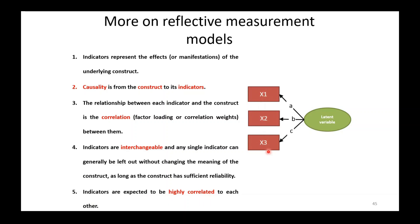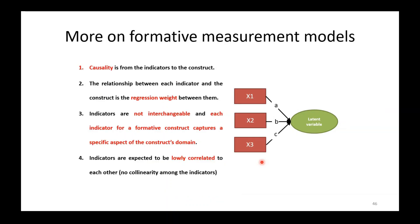The next type of variables are formative measurement models. There are four characteristics. Number one: causality is from the indicators to the construct — the arrows run from x1, x2, and x3 to the latent variable. Number two: the relationship between each indicator and the construct is the regression weight between them, so values a, b, and c represent regression weights between the items and the latent variable. Number three: indicators are not interchangeable, and each indicator captures a specific aspect of the construct's domain.